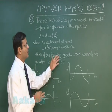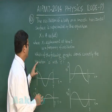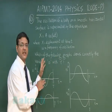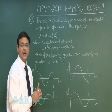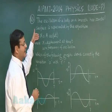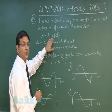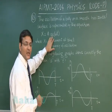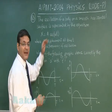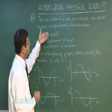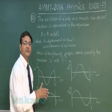They are asking which graph shows correctly the variation of acceleration with time t. If you differentiate x twice, then you get acceleration. If you differentiate cos once, it will be minus sine, and again, that will be minus cos. Cos means the graph of minus cos will be our answer.